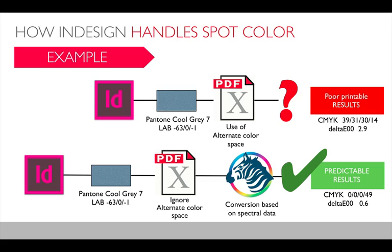This slide is an example of what can happen if you use InDesign to create a PDF document with a certain spot color — for example, Pantone Cool Gray. I've noted the LAB value of that spot color here: 36.0, -1. If you put this into a PDF and use the alternate color space to convert it to CMYK — for example, using Acrobat's Color Convert tool — you will end up with certain CMYK values. As noted here, it uses all four CMYK inks. If you do the calculation for ISO Coated V2, you'll see that these CMYK values give you a ΔE2000 of 2.9, which is a very bad match.